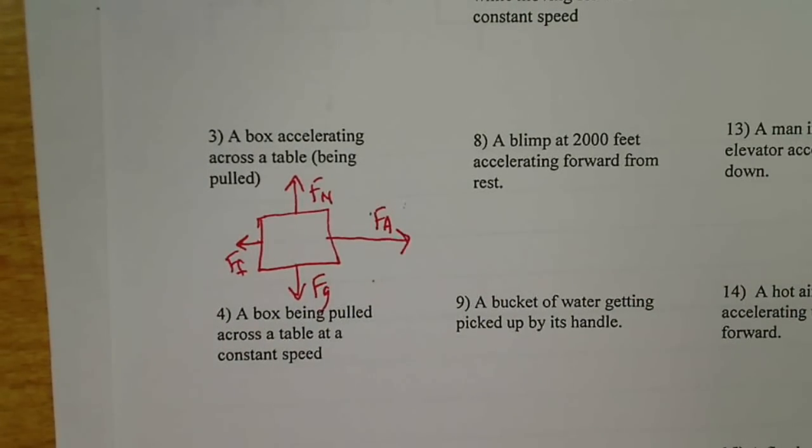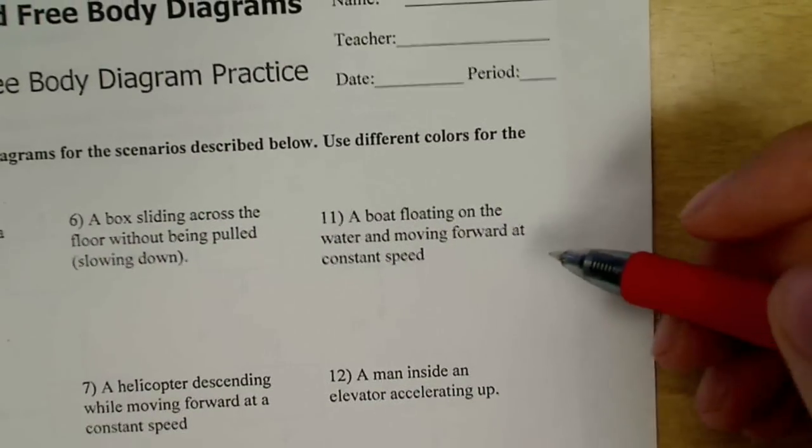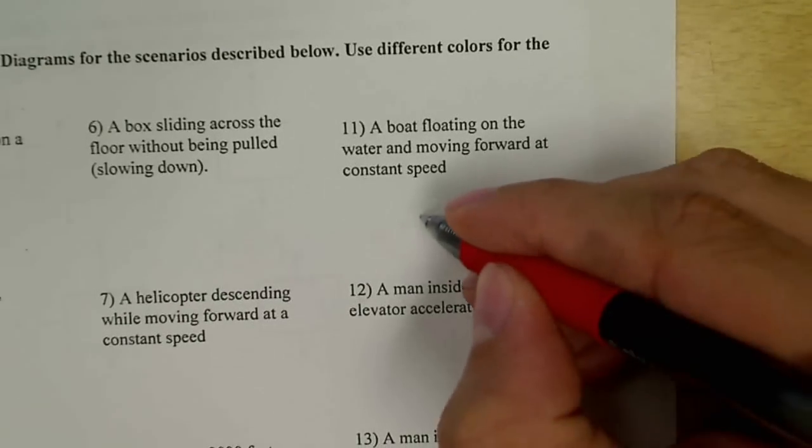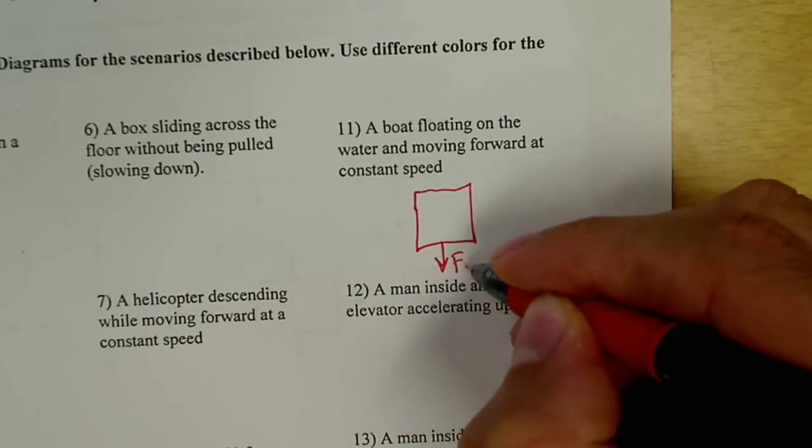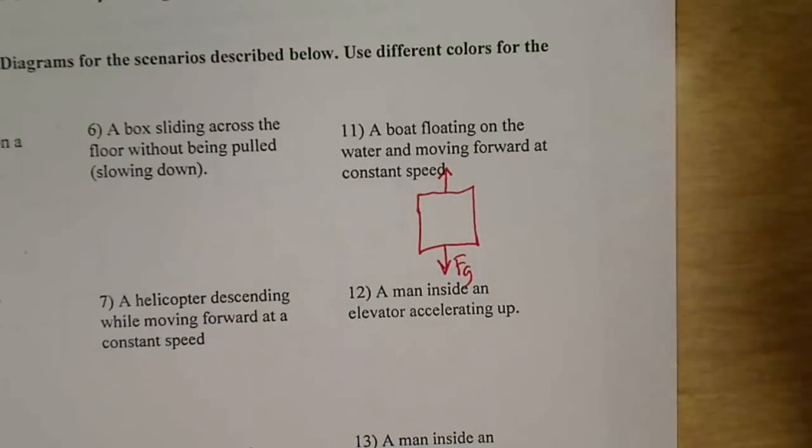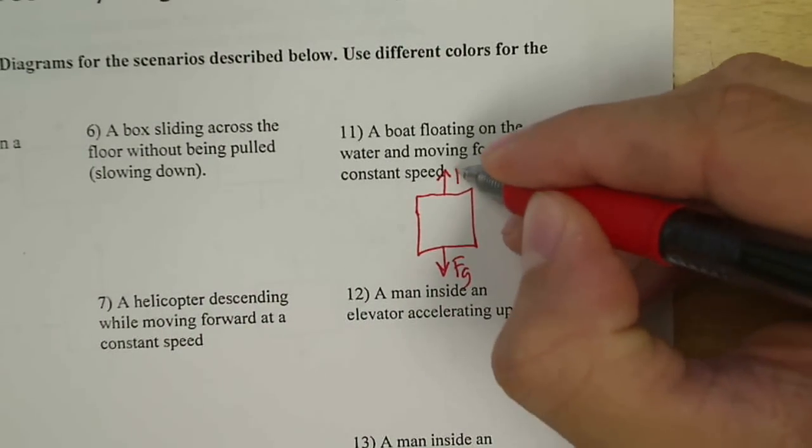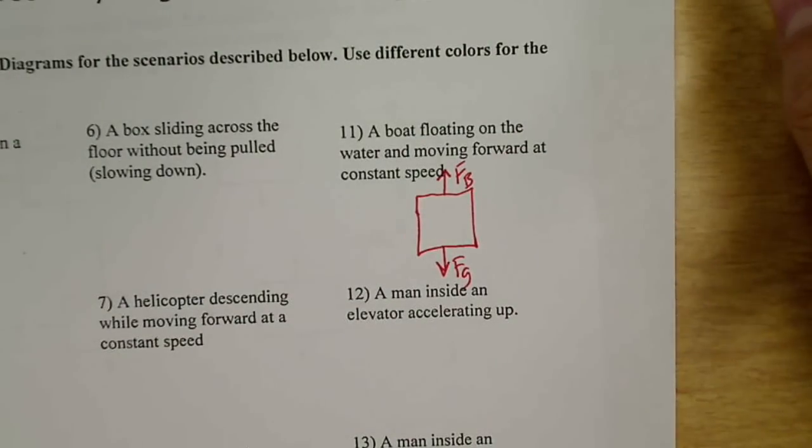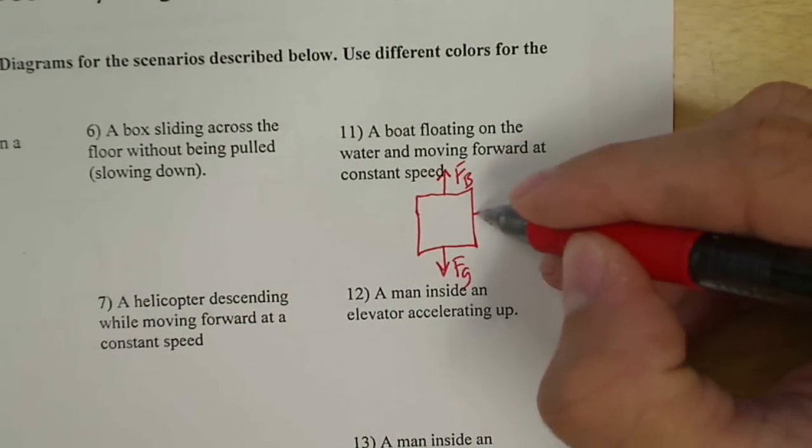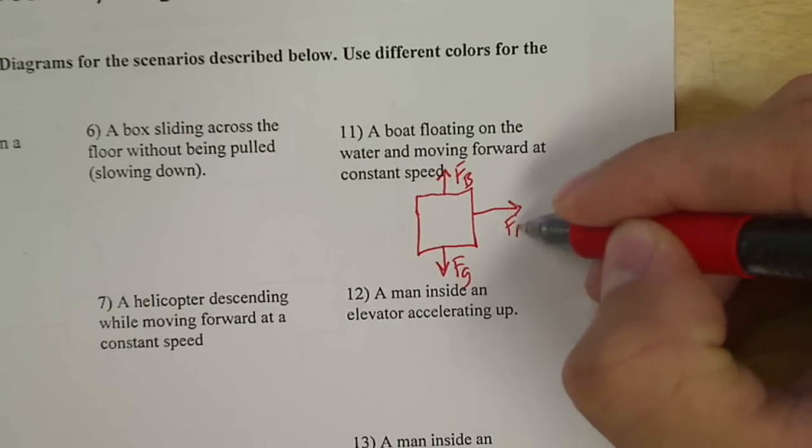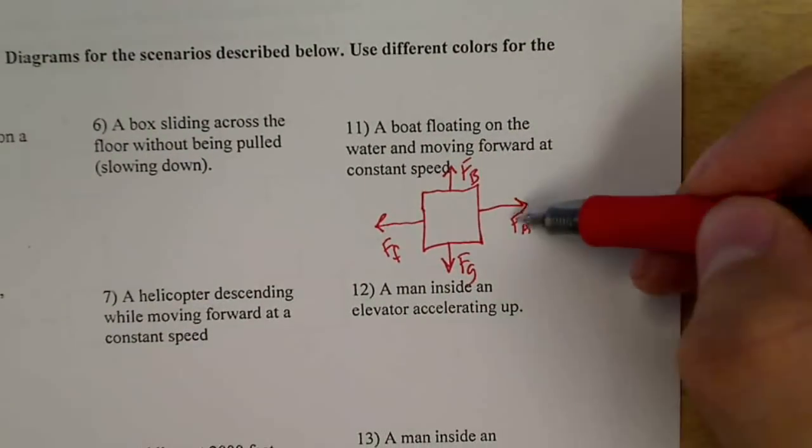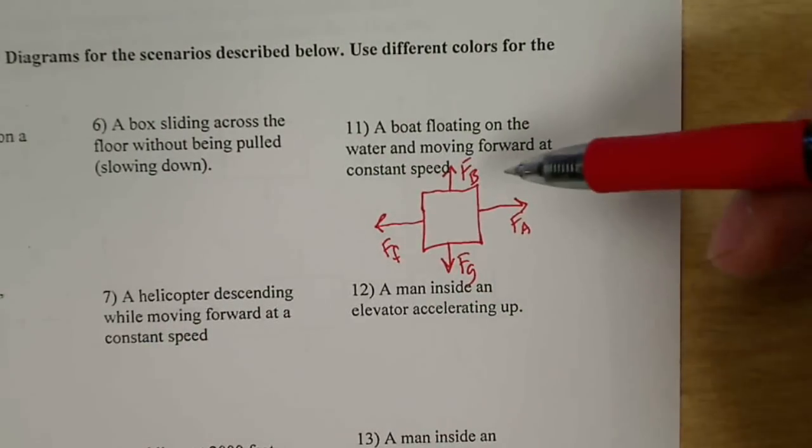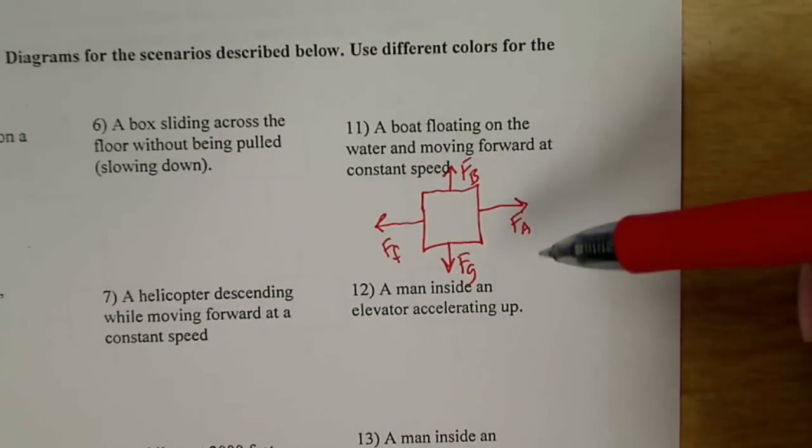Now if we look at a boat floating on the water, moving forward at constant speed. It's being pulled down with a gravitational force. Now normal forces are only from solid objects. In this case, the boat has a buoyancy force. It's floating on top of the water. It's moving forward at constant speed, so it has an applied force from the engine. Then there's a frictional force opposing the motion. Now these arrows are the same size because it is not accelerating. It is moving, but not accelerating.